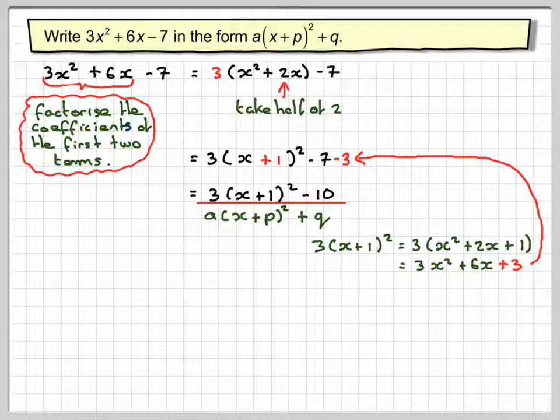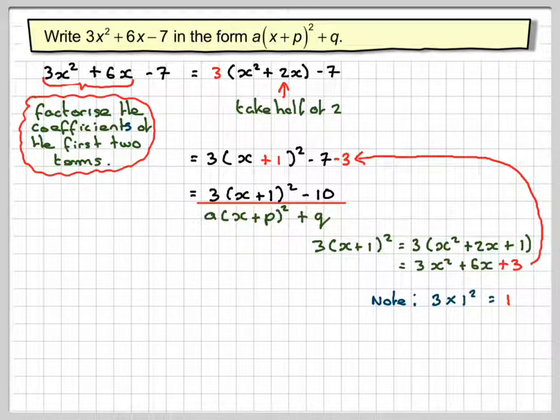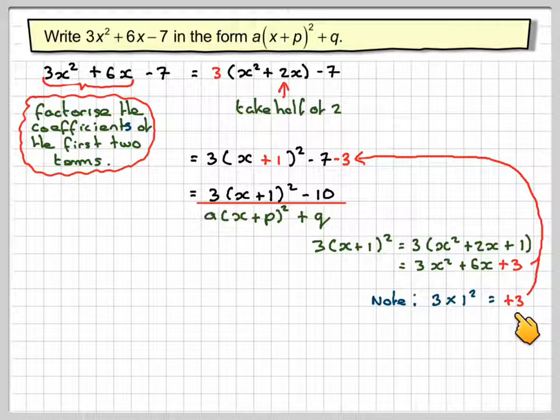Now we can actually get this number another way by just doing 3 times this last number squared. So note, 3 × 1² will make +3 and then we could take away 3. So this might actually be easier than trying to expand the whole thing.